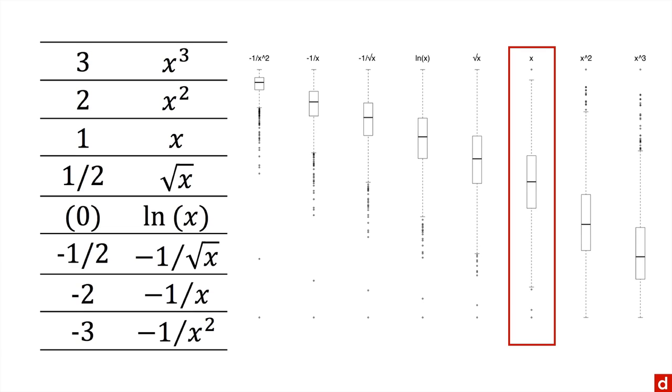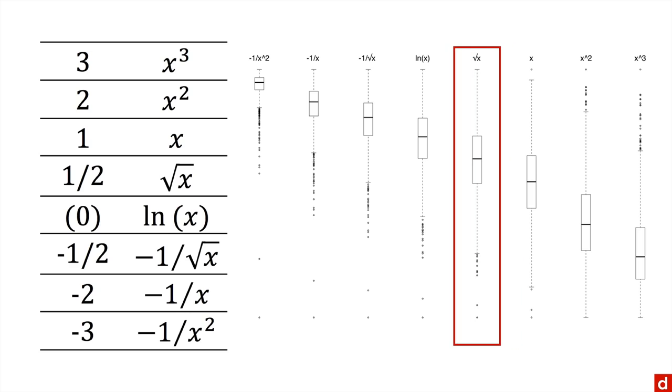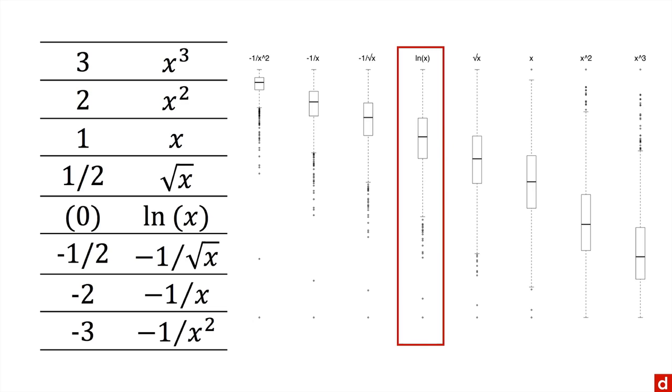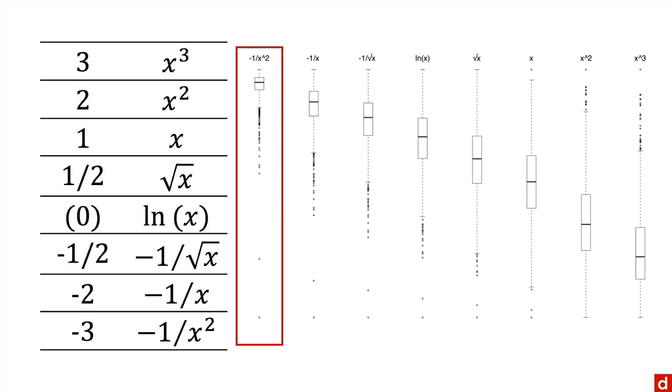And as you start to move in one direction, and you apply the transformation, you take the square root, you see how it moves the distribution over to one end. Then the logarithm, and you get to the end, you get this minus 1 over the square of the score. And that pushes it way, way, way over.